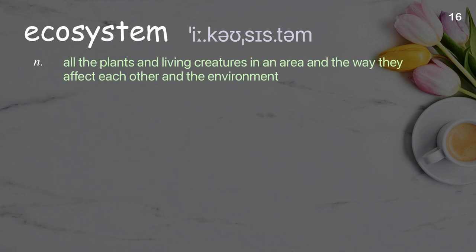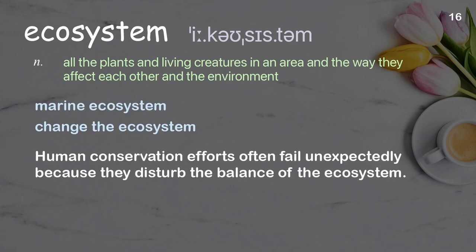Ecosystem. All the plants and living creatures in an area and the way they affect each other and the environment. Examples: Marine ecosystem, change the ecosystem. Human conservation efforts often fail unexpectedly because they disturb the balance of the ecosystem.